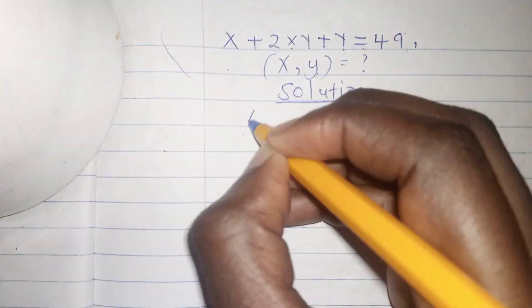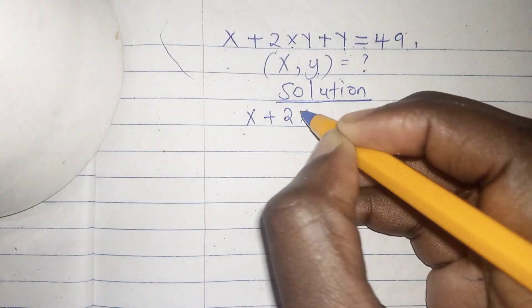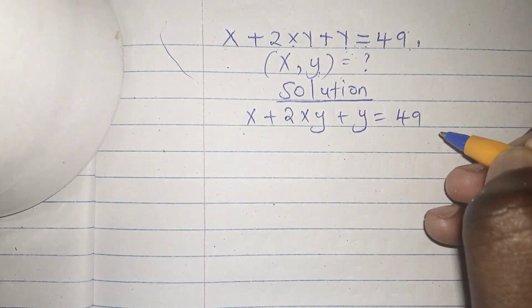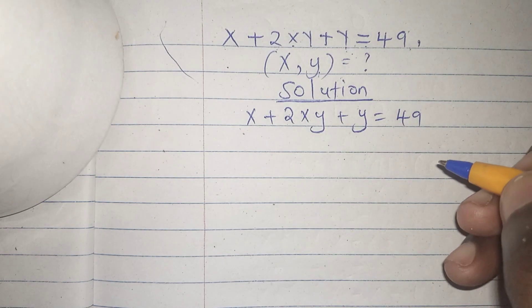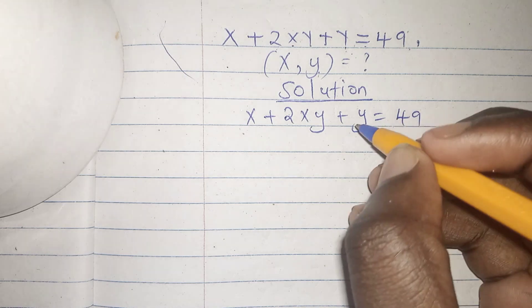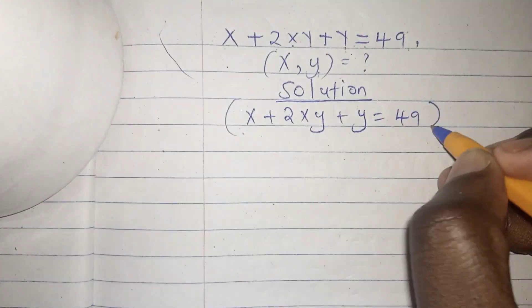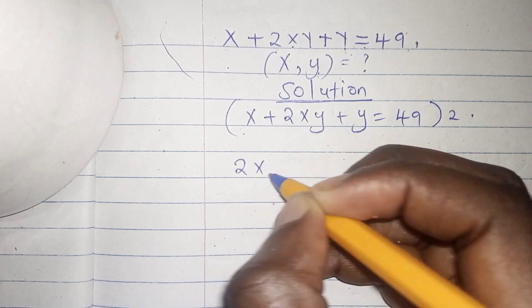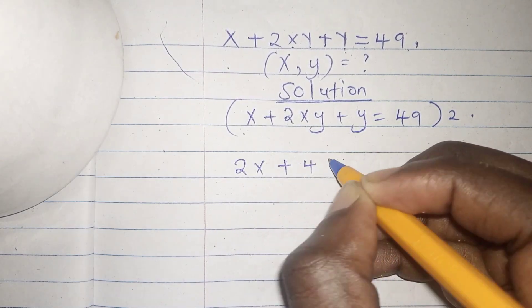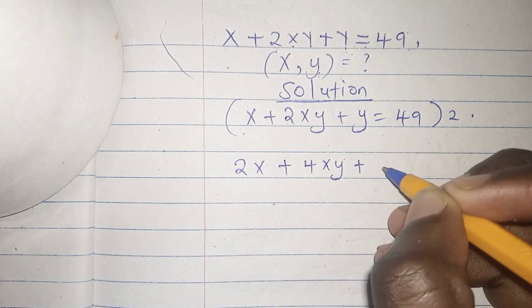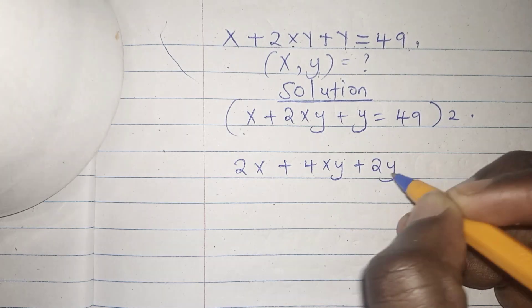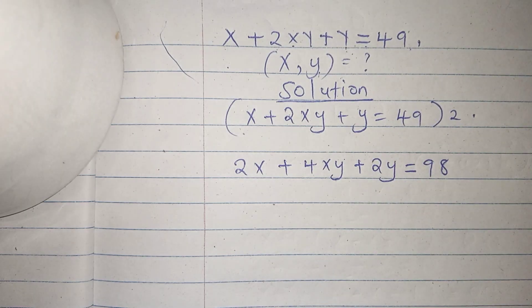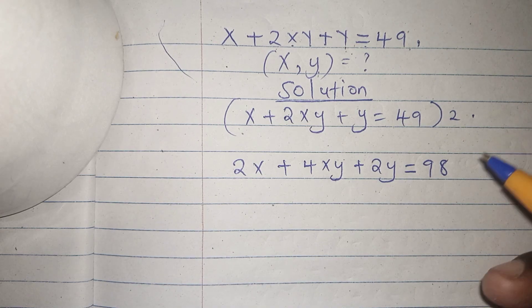Our equation is x plus 2xy plus y equals 49. Our first step will begin by multiplying everything by 2, giving us 2x plus 4xy plus 2y equals 98.